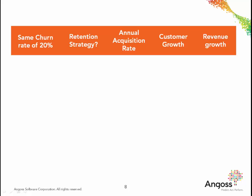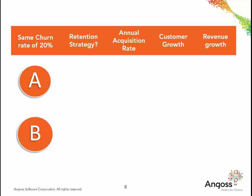As an example, let's look at two different companies, Company A and Company B. Both companies have equal churn rates of 20%. Company A implements a retention strategy designed to reduce their annual churn rate by 50%, bringing it down to 10%. Company B, on the other hand, decides not to implement a retention strategy. If both companies acquire new customers at a rate of 20% per year,